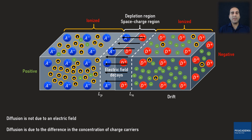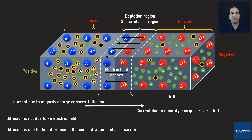Now think about the current direction of these mobile charges. The current made by the movement of majority charge carriers is called the diffusion current and is directed from P to N. The current made by the movement of minority charge carriers is called the drift current and is directed from N to P. In equilibrium, the diffusion and drift currents are equal, and therefore the average net current in the whole device is zero.